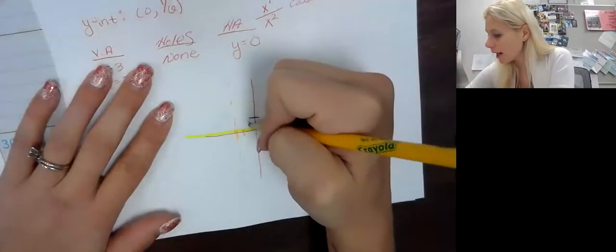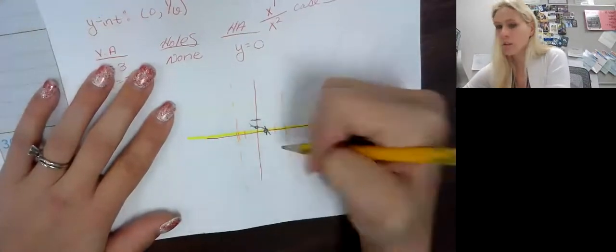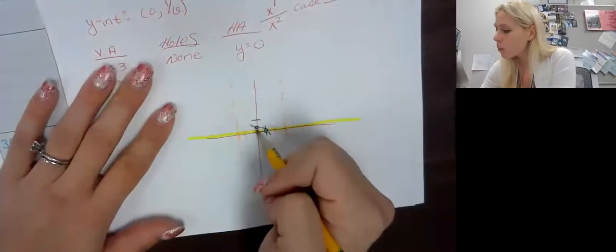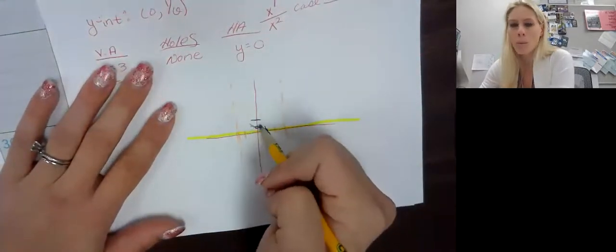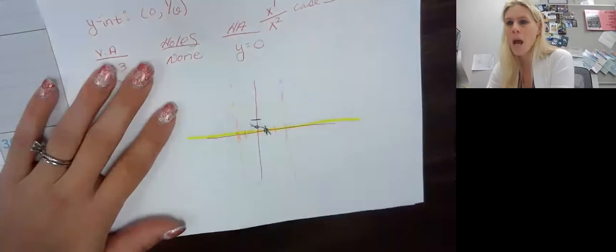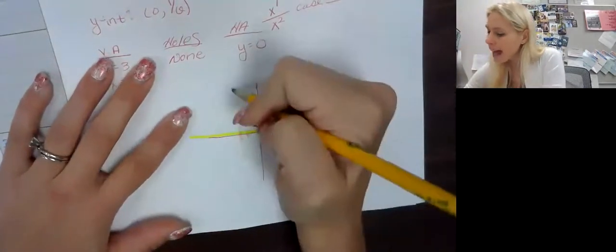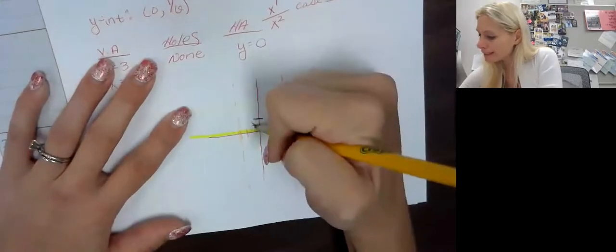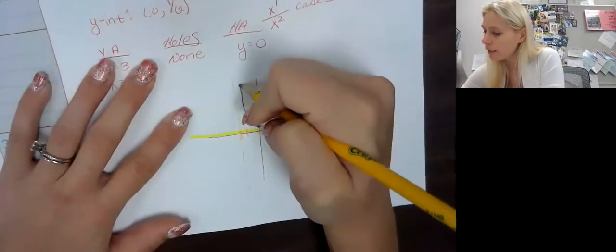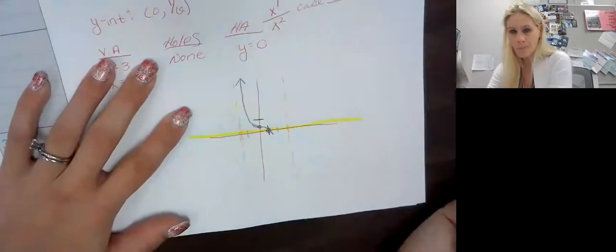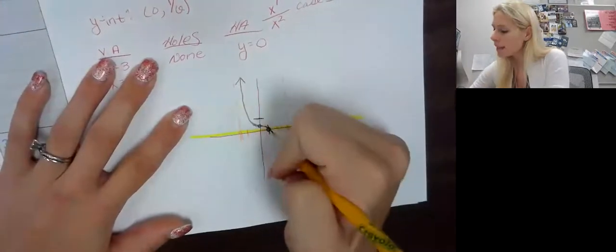...because this y-intercept here, it has to cross this y-intercept. So if I kept going, this is going to go up and this one's going to go down. How do I know that? Well, because if this one went down, we would have another x-intercept, but we only have one.